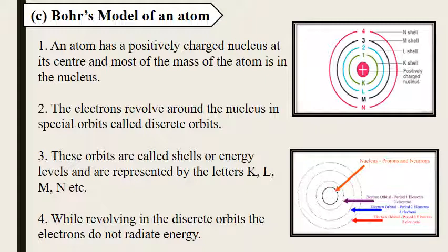An atom has a positively charged nucleus at its center, and around the nucleus, electrons revolve in their different orbits. Those orbits are named K shell, L shell, M shell, N shell, or we can say 1, 2, 3, 4.